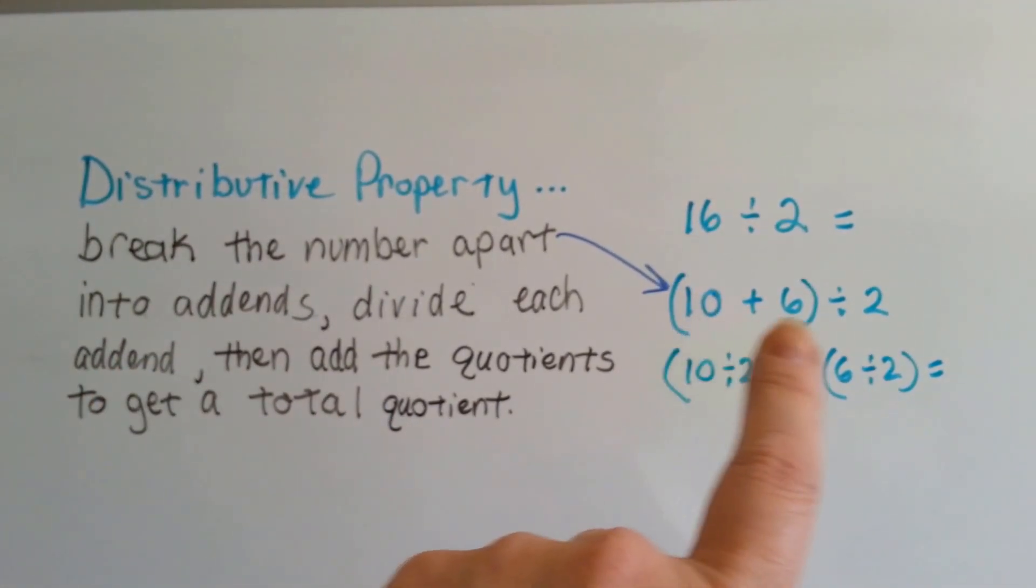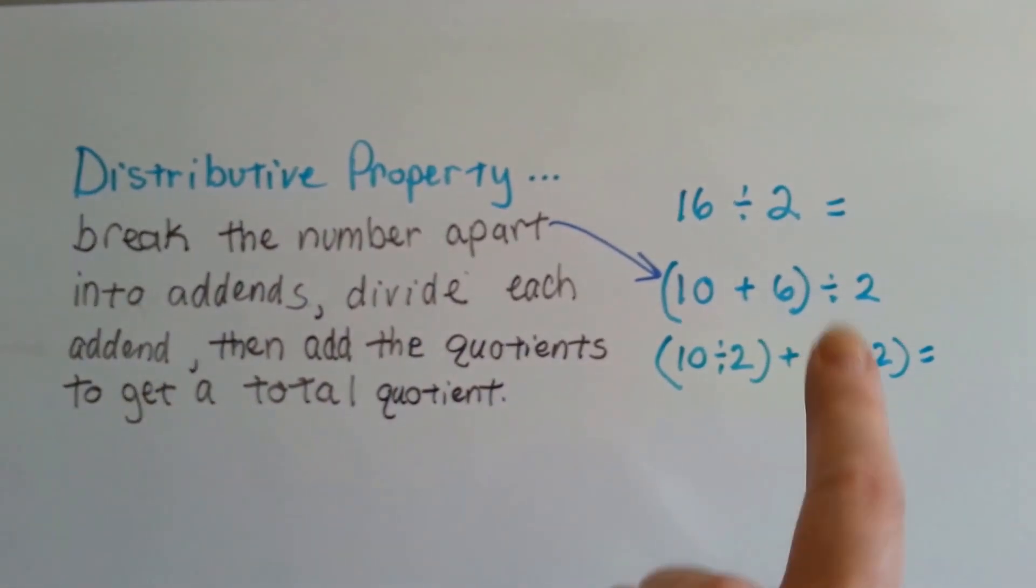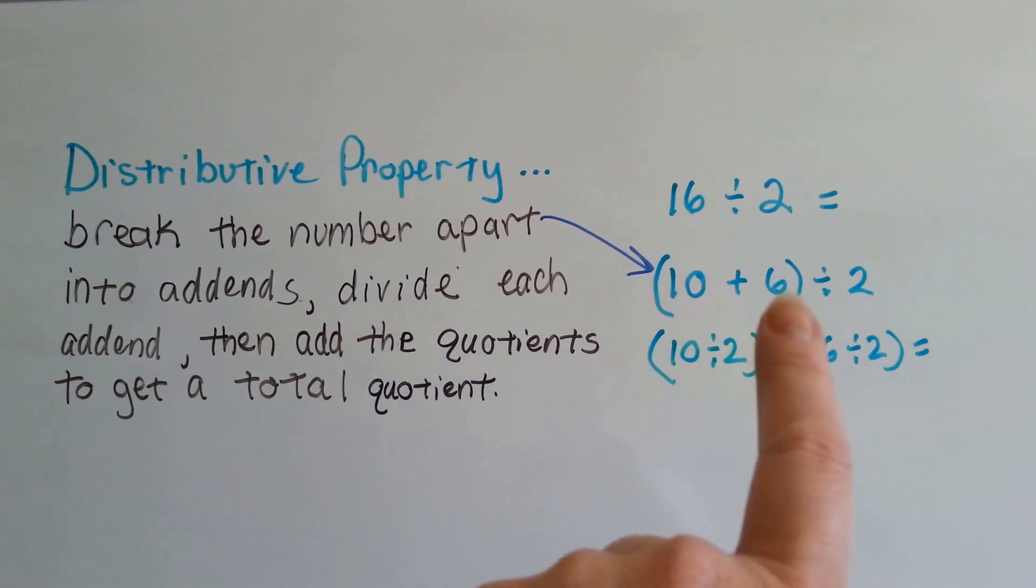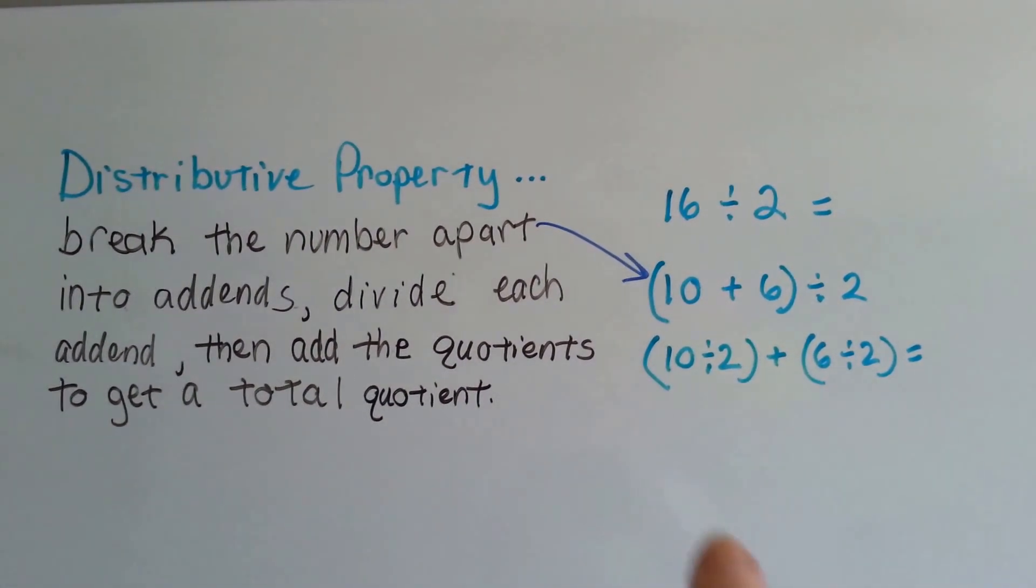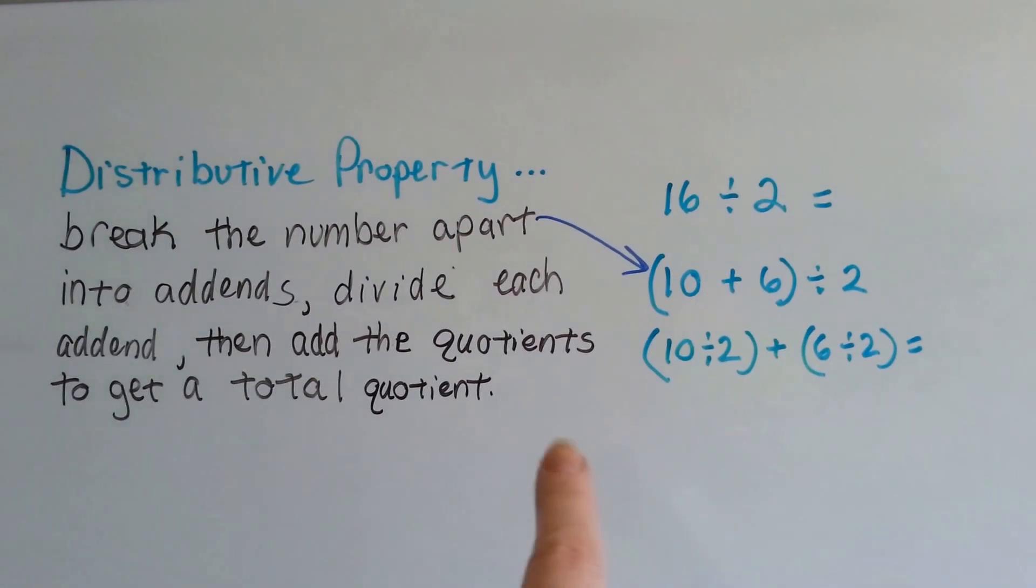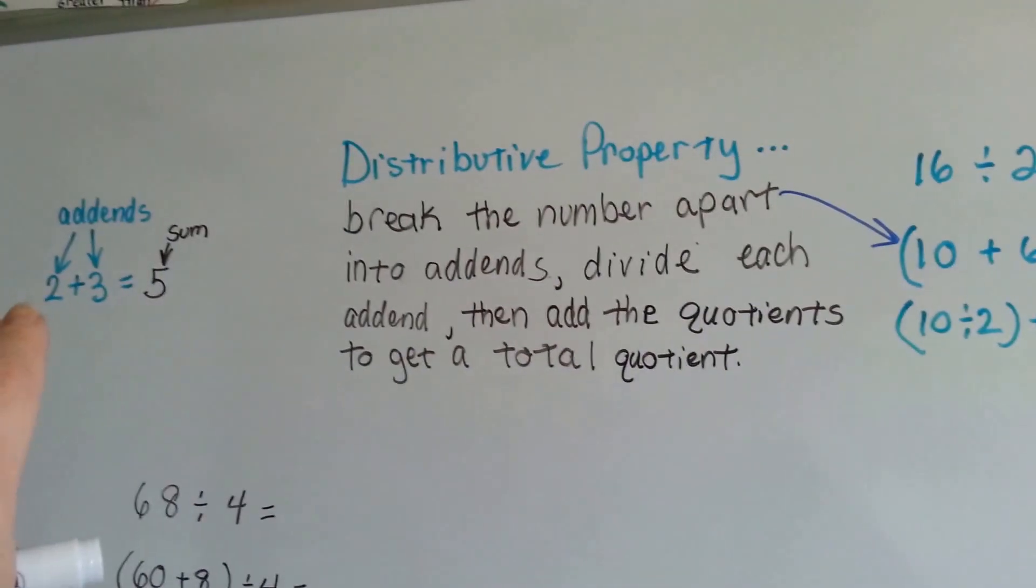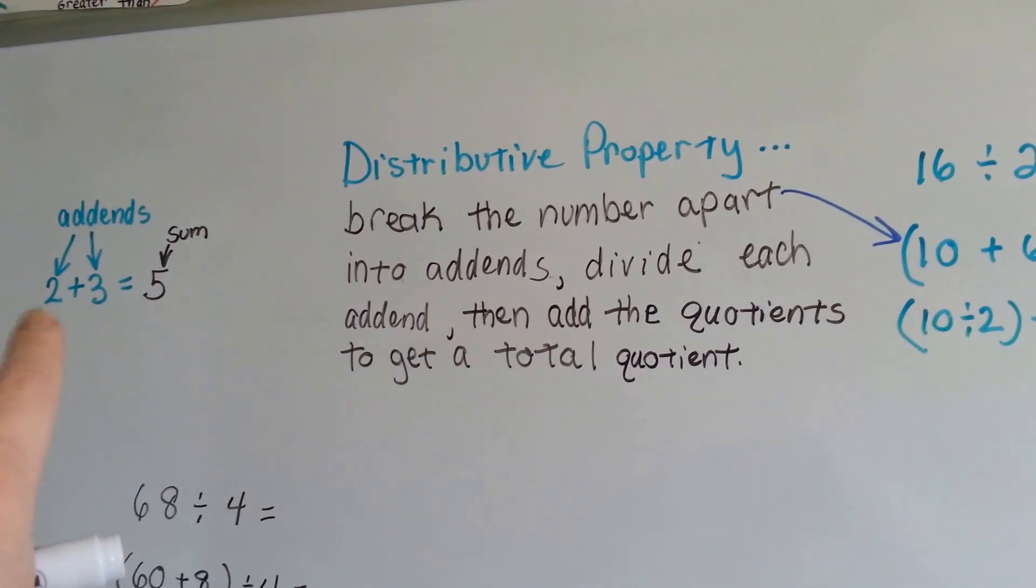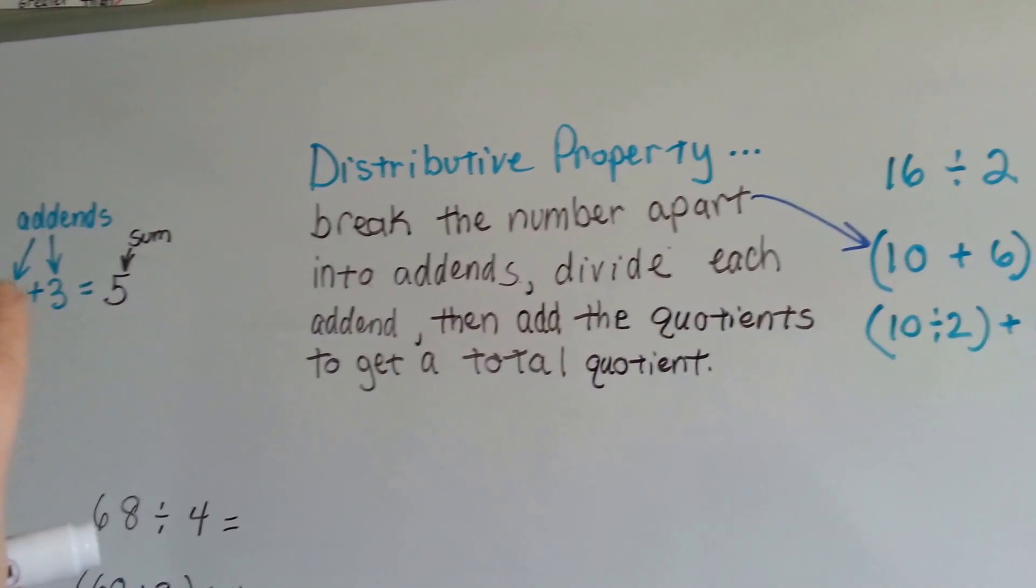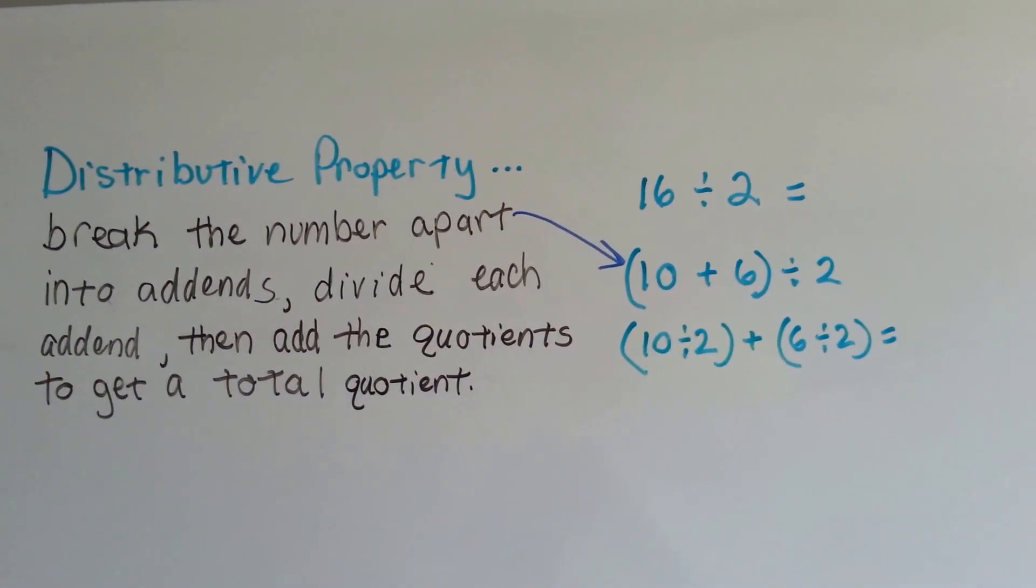16 becomes 10 plus 6. We divide each addend: 2 goes into 10, 2 goes into 6. Then we add the quotients to get a total quotient. It's easier than doing the division with one big number. Remember, an addend is the two numbers you add together to get a sum, and the quotient is the answer in the division problem.